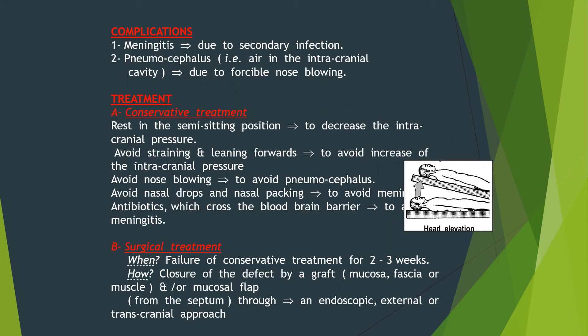Complications of cerebrospinal rhinorrhea include meningitis due to secondary infection, and pneumocephalus — air in the intracranial cavity — due to forcible nose blowing.